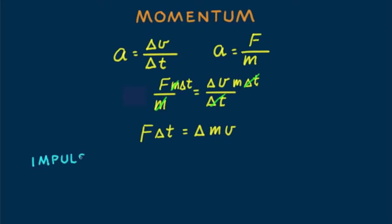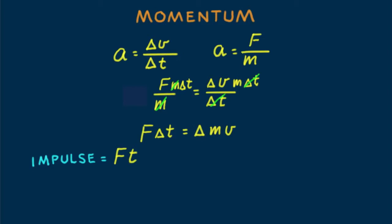The quantity f delta t is called impulse. Or letting delta t simply be t for the time interval, we can say impulse equals ft — that is, impulse equals force f exerted on an object multiplied by the time t it acts.